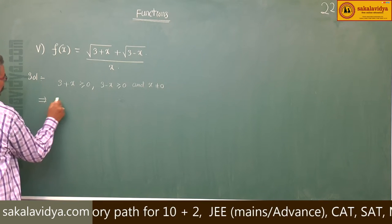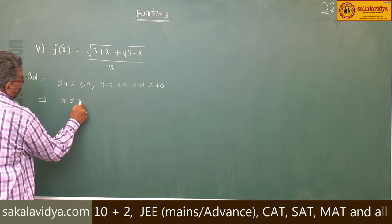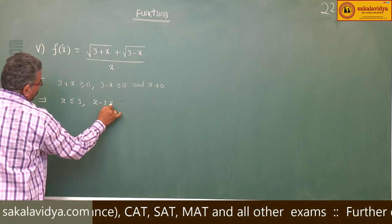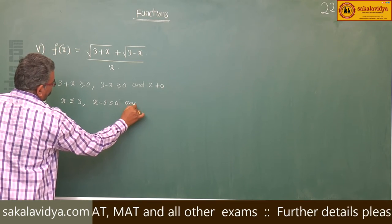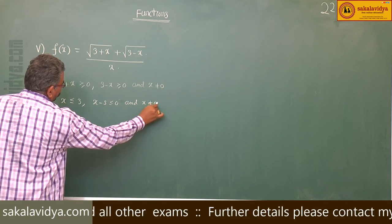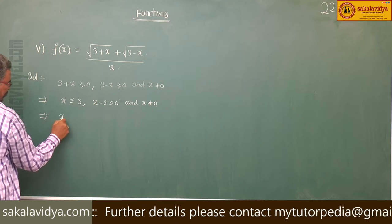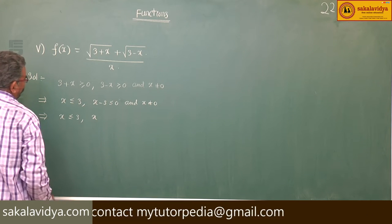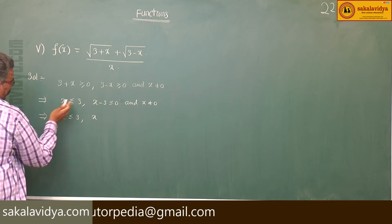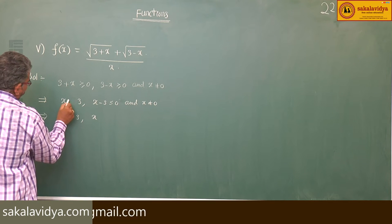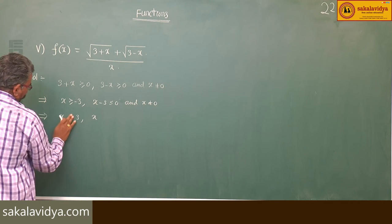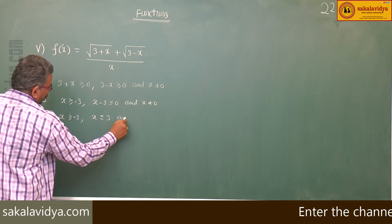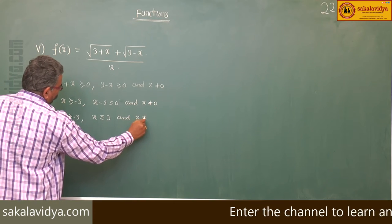Now, x less than or equal to 3. Multiplying by minus 1, x minus 3 less than or equal to 0 and x does not equal to 0. This gives us x greater than or equal to minus 3, x less than or equal to 3, and x does not equal to 0.